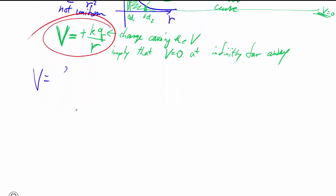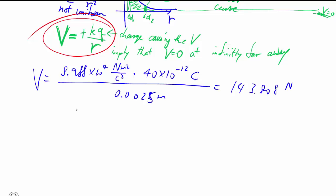V is equal to 8.988 times 10 to the 9, all the units are going to work out, times 40 times 10 to the minus 12 for the picocoulombs, divided by 0.0025 meters. No square this time because we're talking about potential. And so it's 144 volts positive because it's near a positive charge.